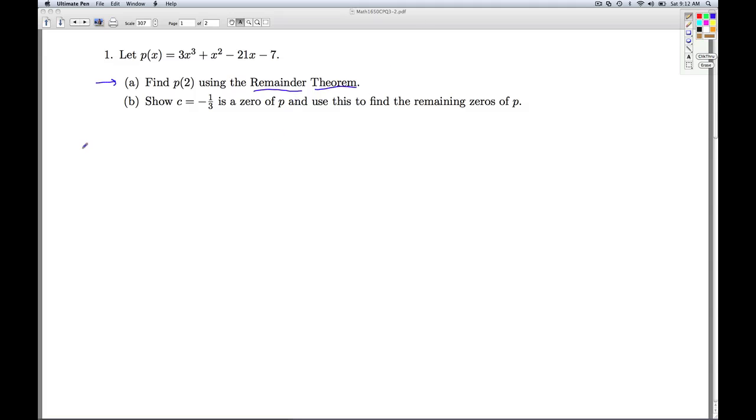Well, the remainder theorem says if you have a polynomial function p, if you divide by the quantity x minus c, the remainder is p of c. So in this case we're going to take our polynomial, we're going to divide it by x minus 2. Whatever the remainder is is going to be p of 2.